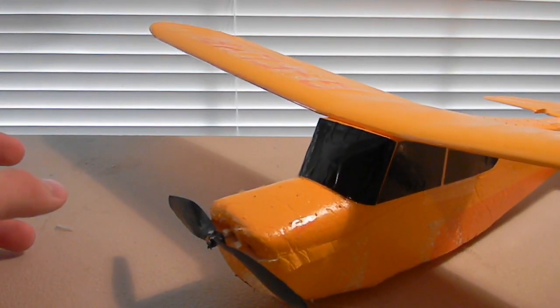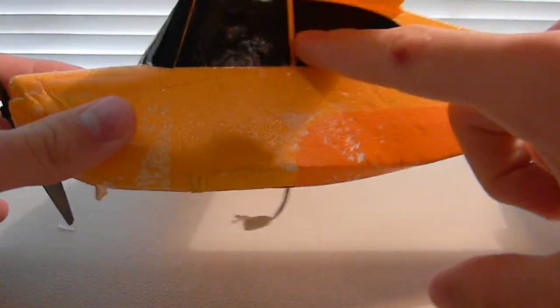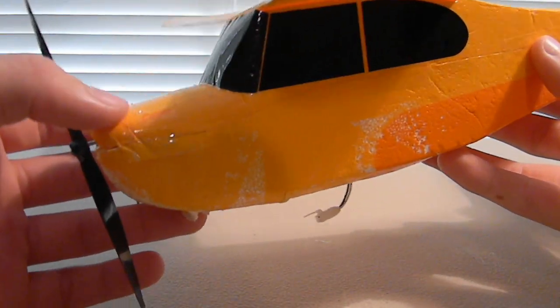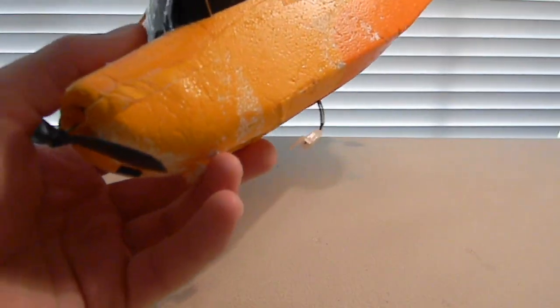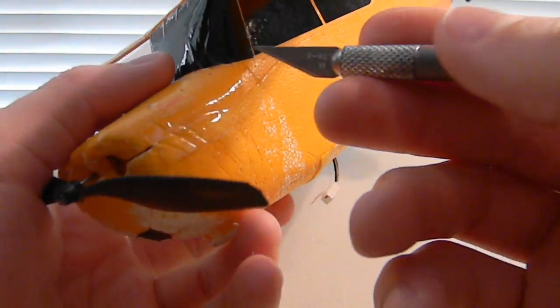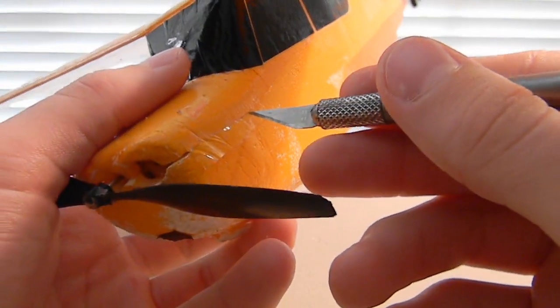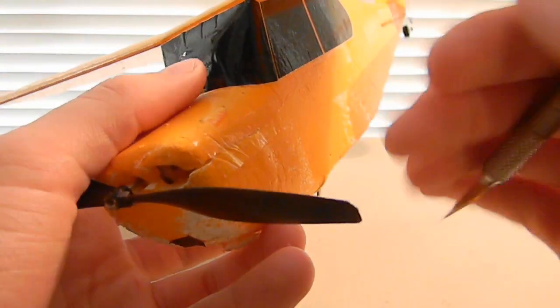Getting started, you'll notice there is tape going around the edge of your plane and one piece here. You're going to want to cut all that off so you can access the inside of the nose of your plane. Take your exacto knife or scissors and just cut along that edge, or